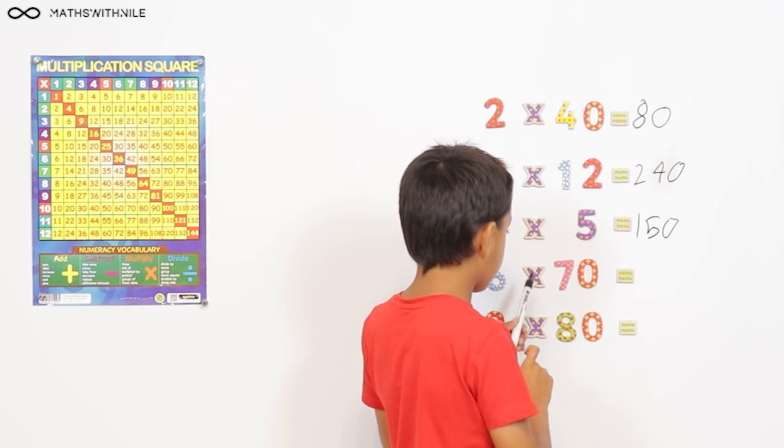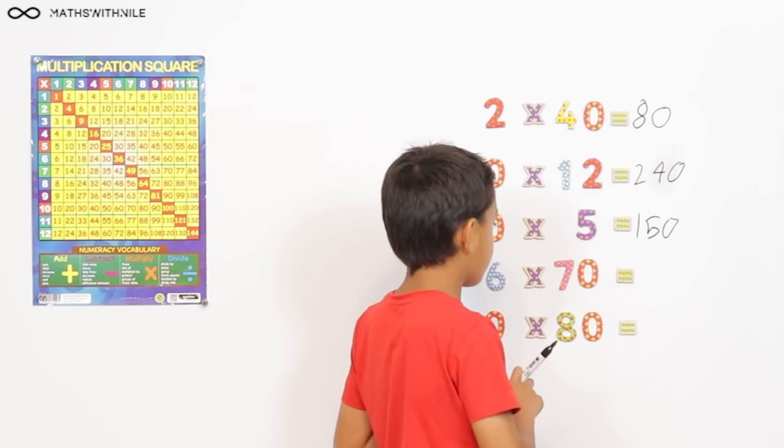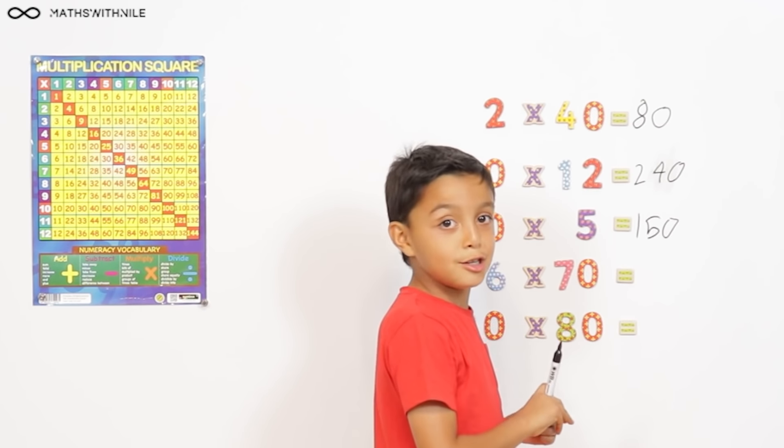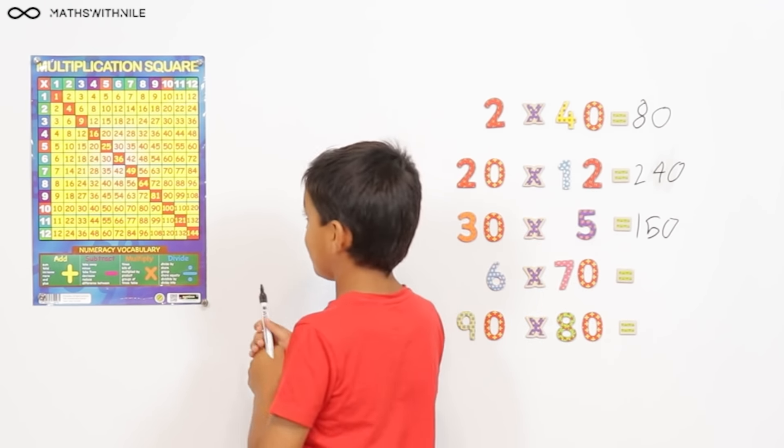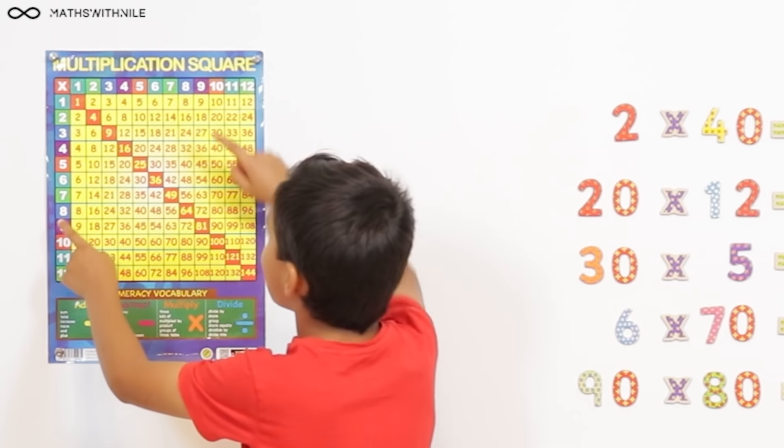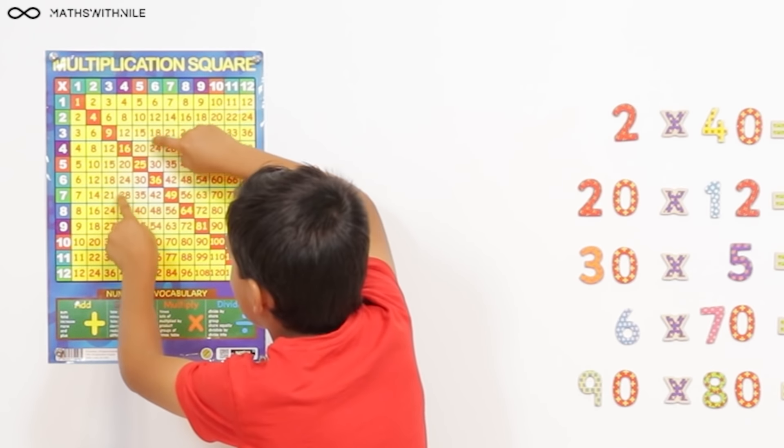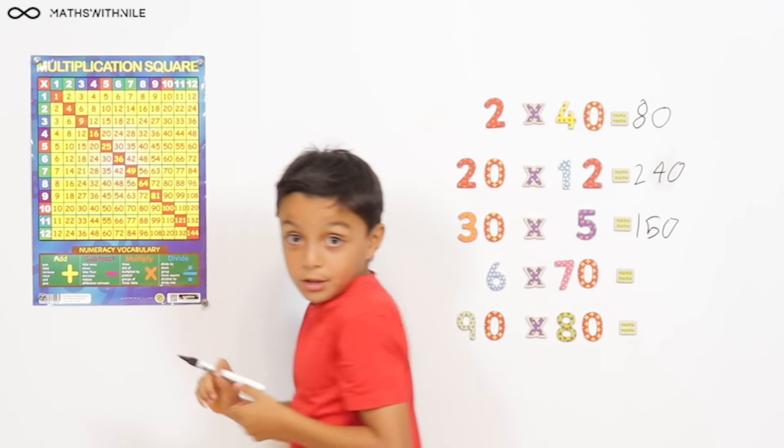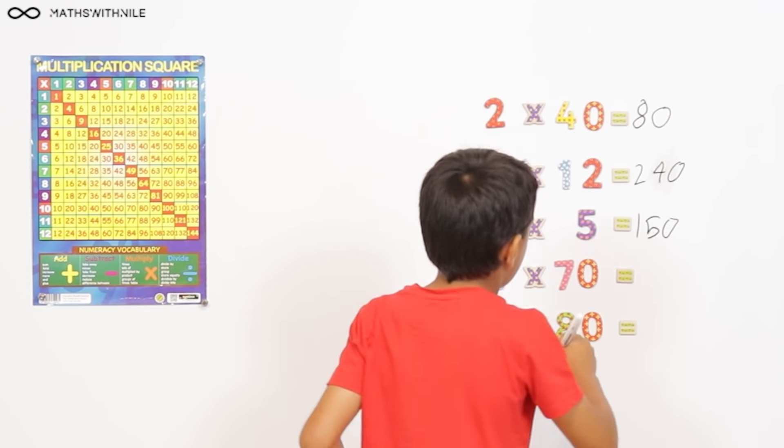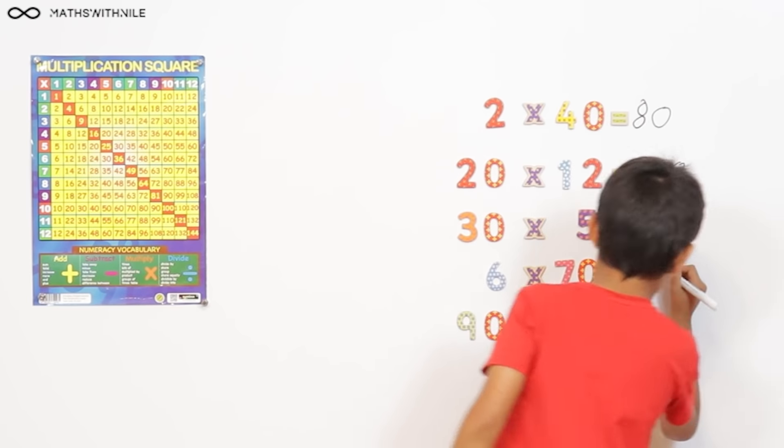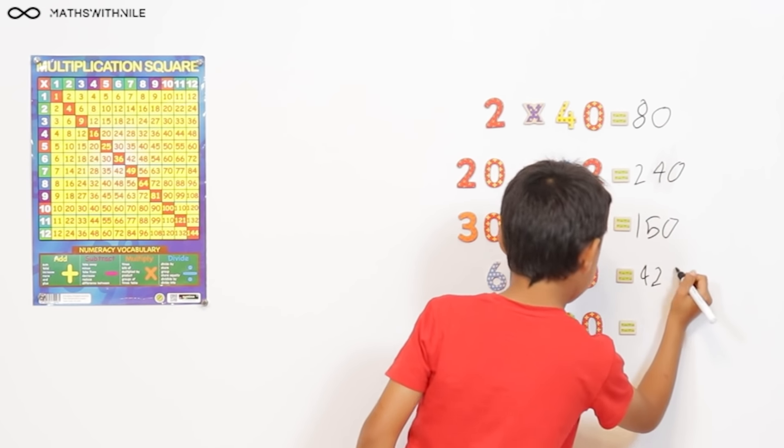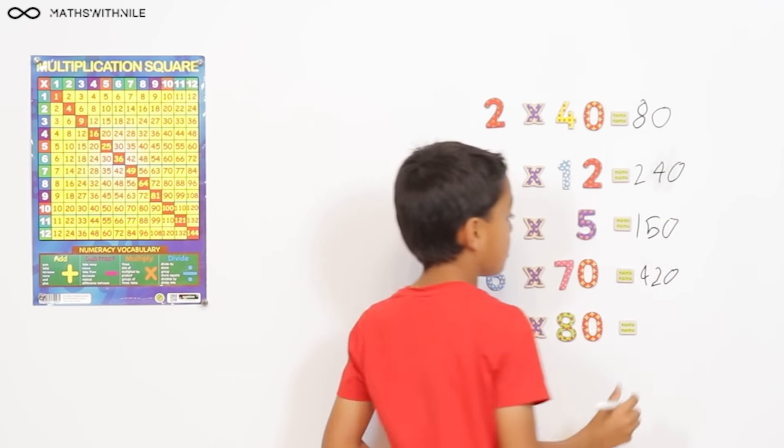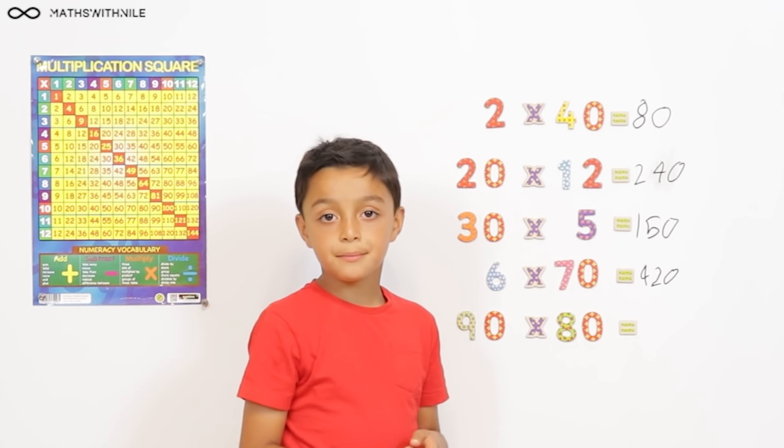6 times 70. So, 6 times 7 is 42. And then I'll just add my 0 onto the end. So, what's the answer? 420. Good job.